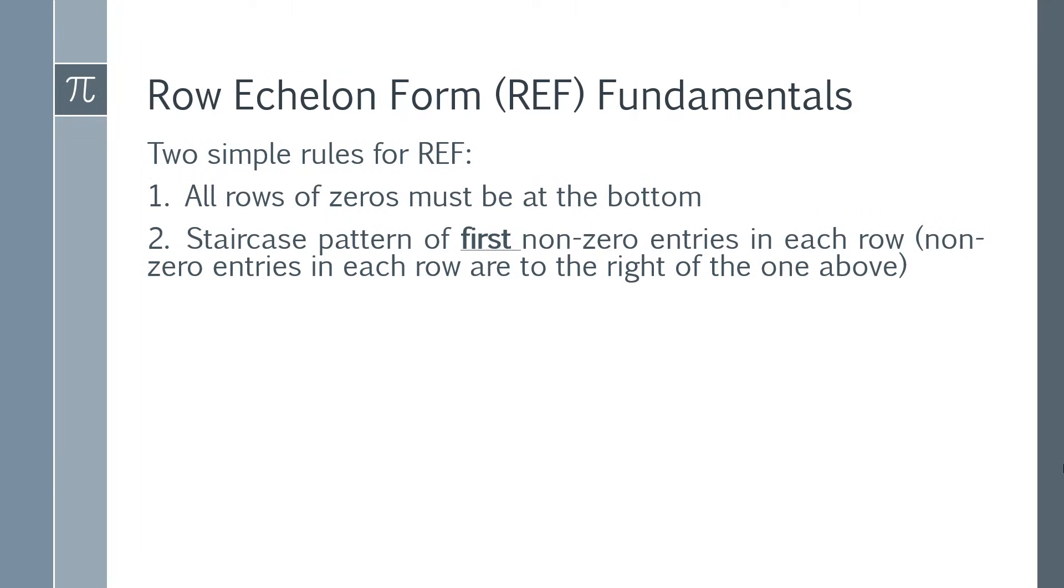The second criteria is a little bit more complicated, but I'll show you examples. When you have row echelon form, you have a staircase pattern of first non-zero entries in each row. In other words, the non-zero entries in each row are to the right of the one above.